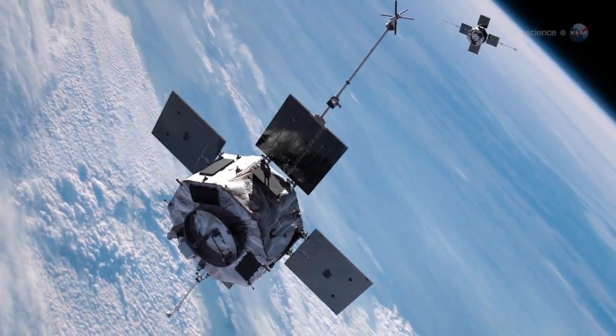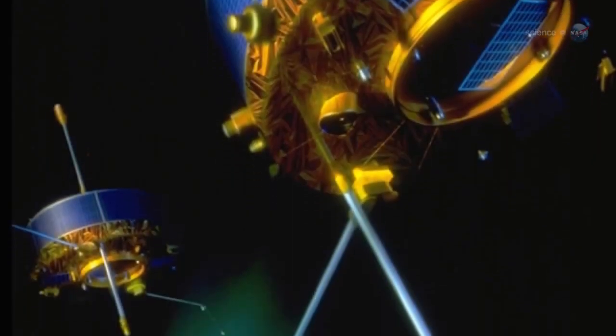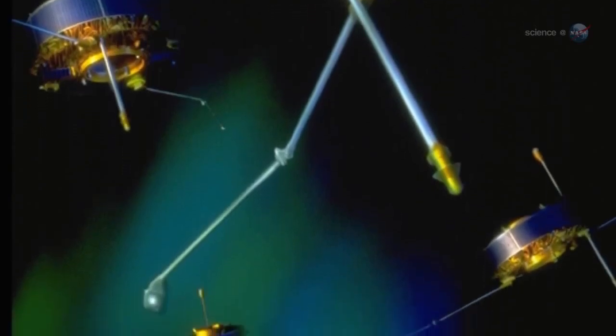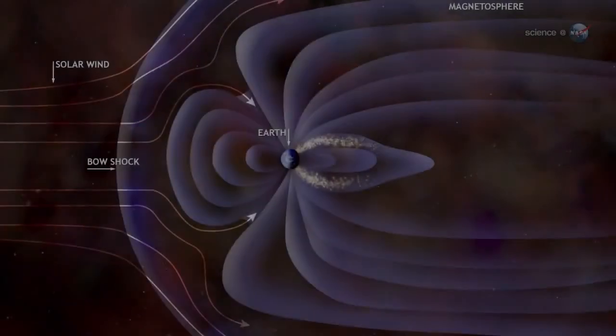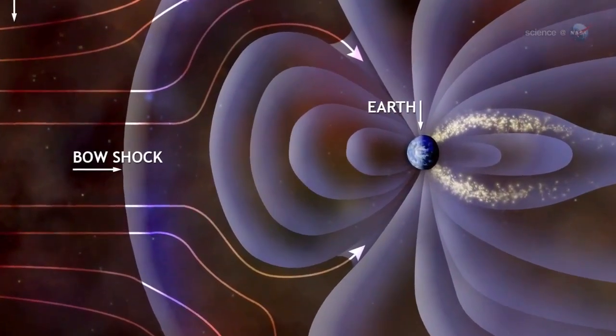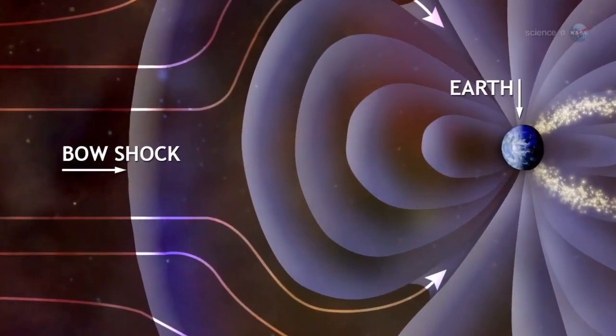Observations by NASA's Themis spacecraft and Europe's cluster probes suggest that these magnetic portals open and close dozens of times each day. They're typically located a few tens of thousands of kilometers from Earth, where the geomagnetic field meets the onrushing solar wind.